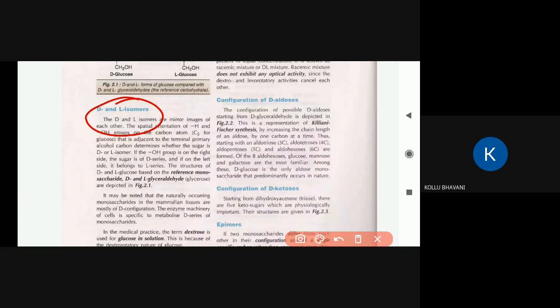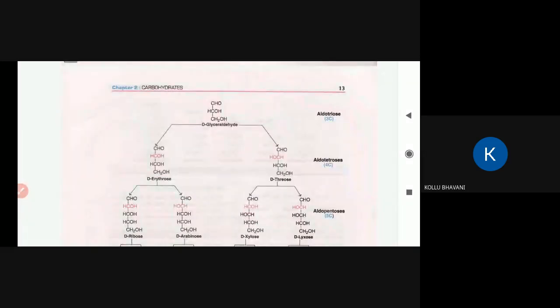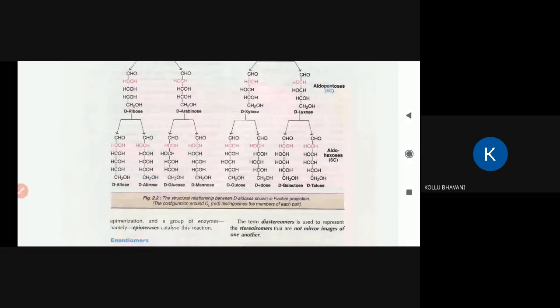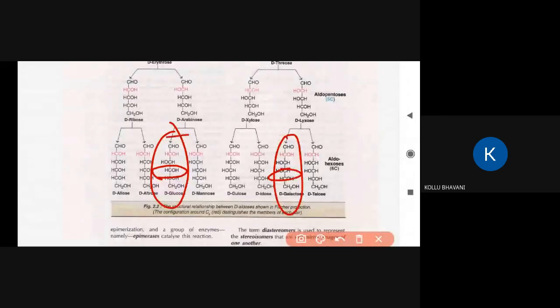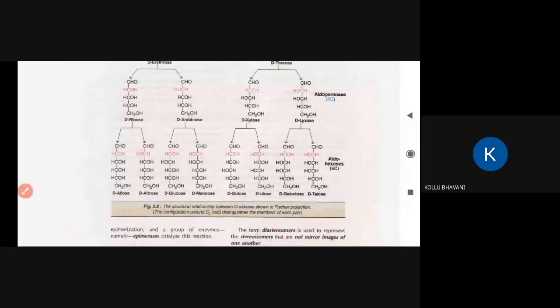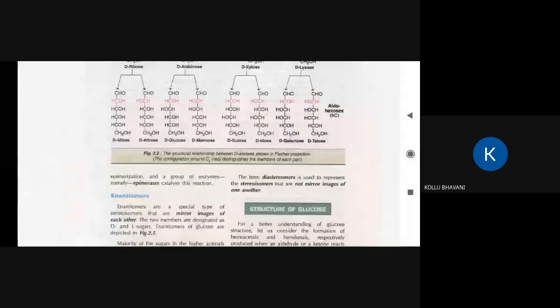DL isomers are D and L isomers of monosaccharides. After DL isomers, we discuss epimers. Epimers differ in configuration at only one carbon. For example, glucose and galactose are epimers — their structures differ at the 4th carbon. In glucose the OH at carbon 4 is on the right side, while in galactose it is on the left side.